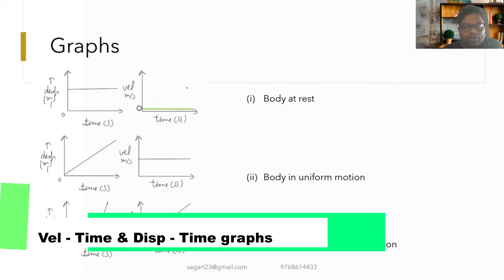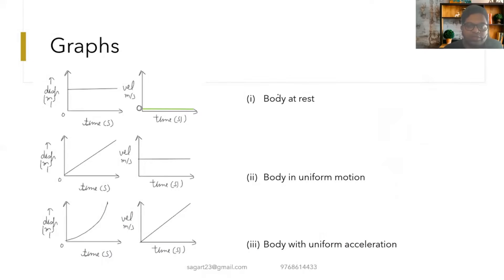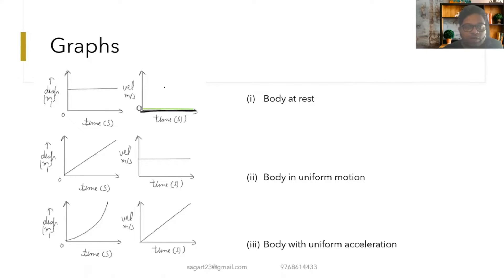The displacement-time and velocity-time graphs of a body at rest: when the body is at rest, its position does not change, and therefore the displacement-time graph is horizontal. Since it is at rest, the velocity is zero, so this graph represents zero velocity of that body.